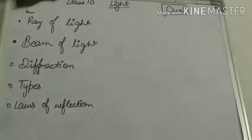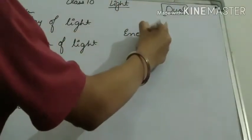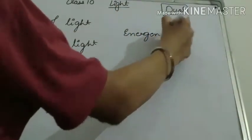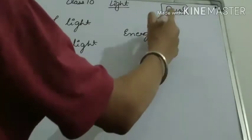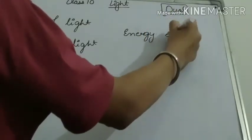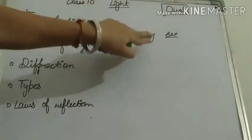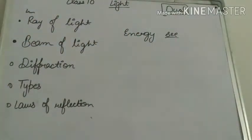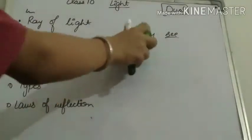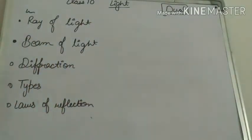First of all, let's see the definition of light. Light is energy which helps us to see. The energy that helps us to see is known as light. This is the definition of light. Next, we will talk about these points. These are all points that we will discuss in this video.